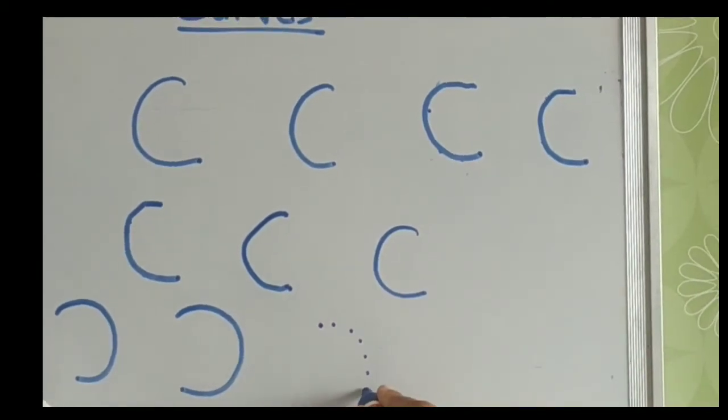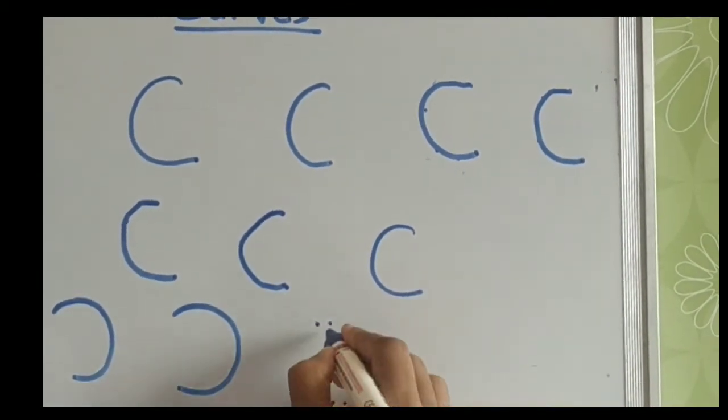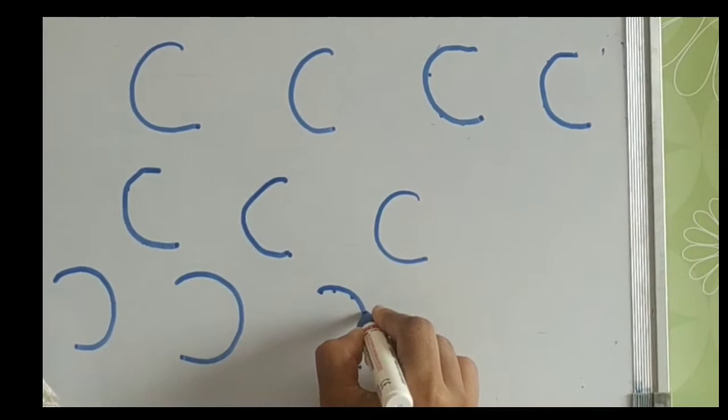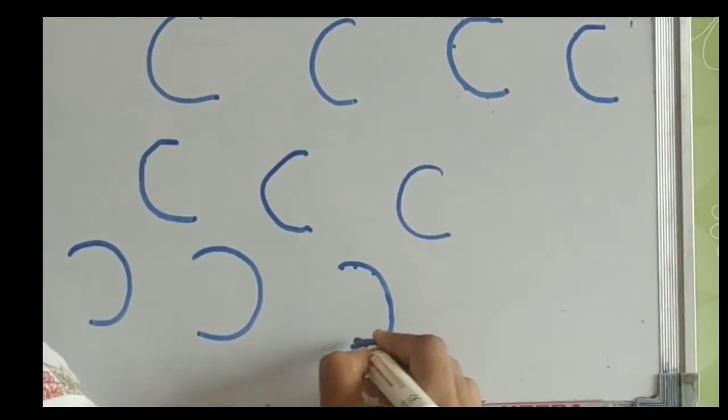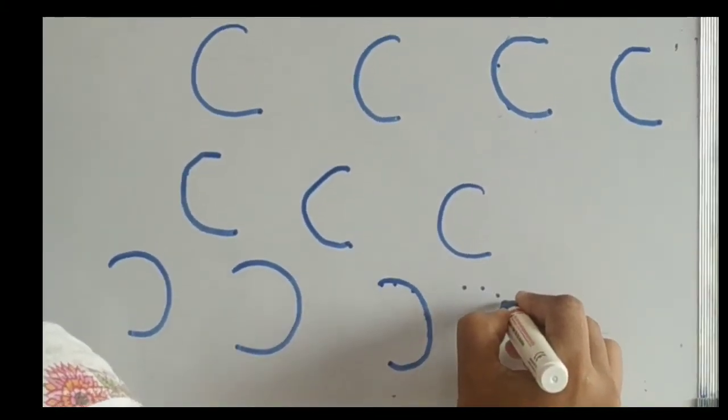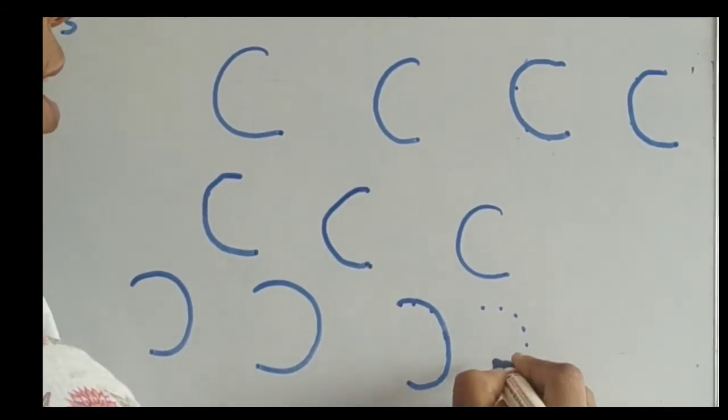Initially you have to give dots so that they trace over the line and then they join all these dots and form right curve.